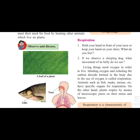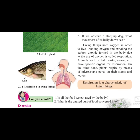On the other hand, plants respire by means of microscopic pores on the stems and leaves. Microscopic pores means very small, very tiny pores present on the leaves which we cannot see. Through these pores they carry out respiration. Which gas do they take inside? They require carbon dioxide. And which gas do we require for our survival? We require oxygen. So respiration is one of the characteristics of living things.